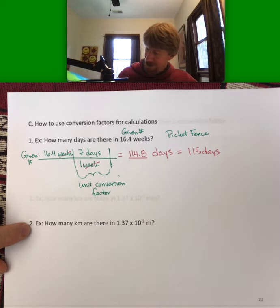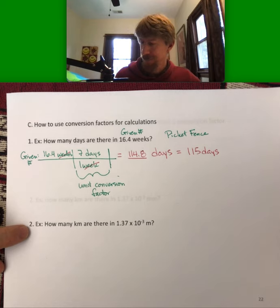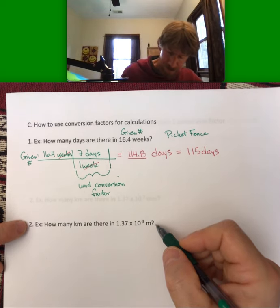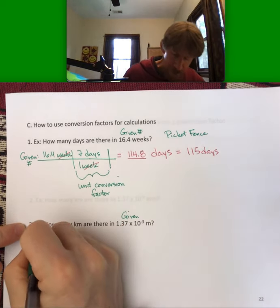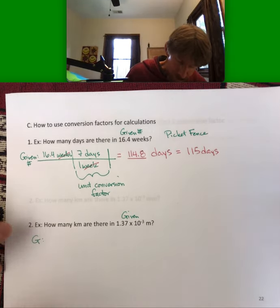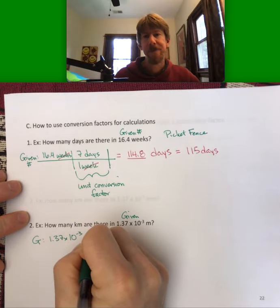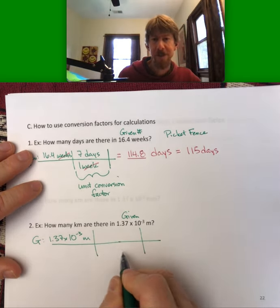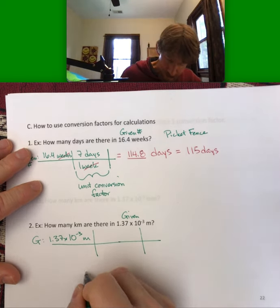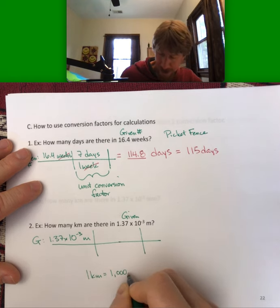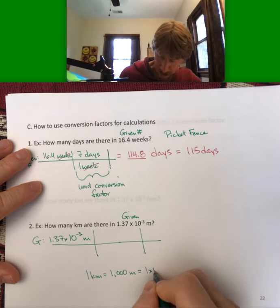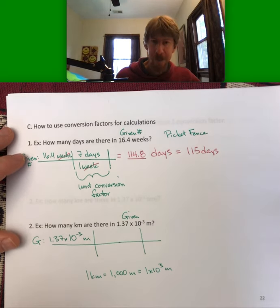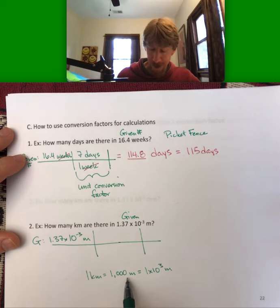Next: how many kilometers are there in 1.37×10⁻³ meters? Memorizing your metric prefixes is important. Given: 1.37×10⁻³ meters. Set up your picket fence and use the conversion factor: 1 kilometer equals 1,000 meters, or 1×10³ meters. I have meters on top so I need meters on the bottom of my conversion factor.